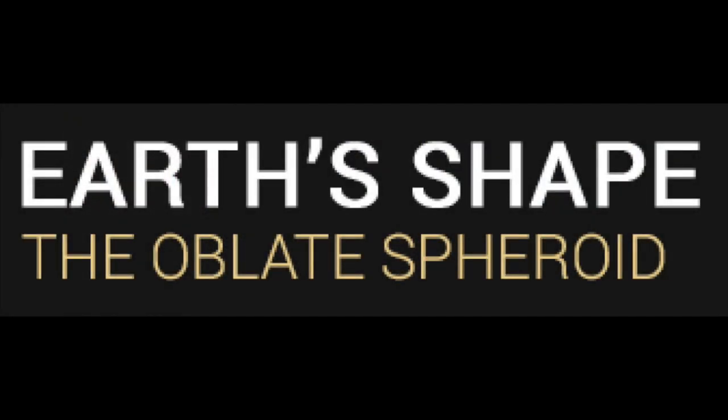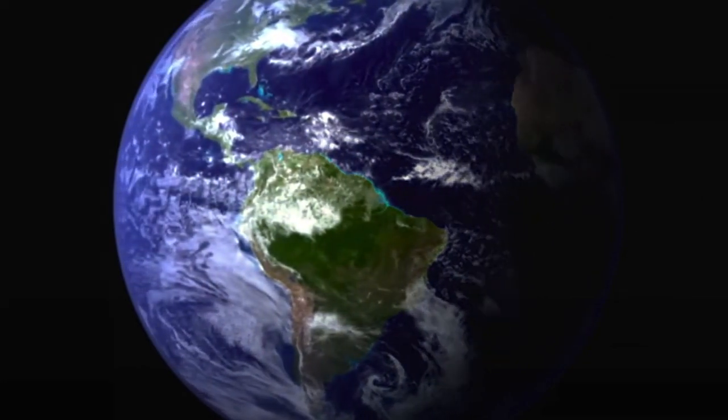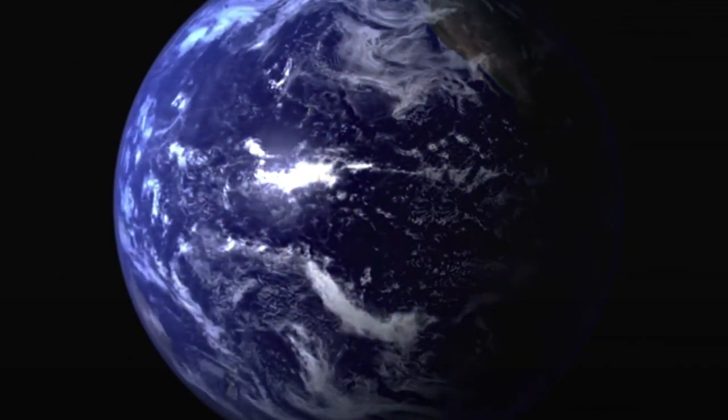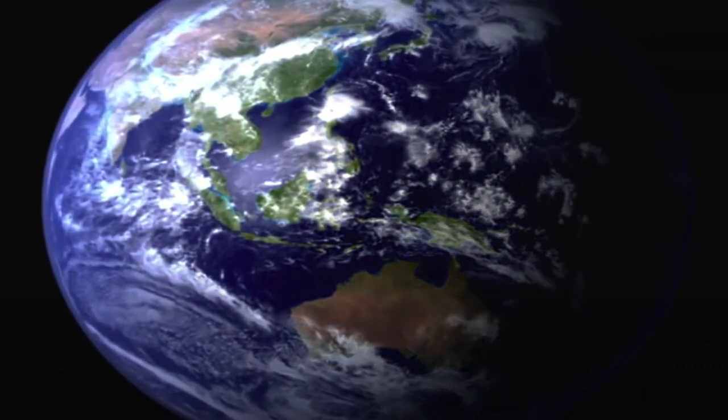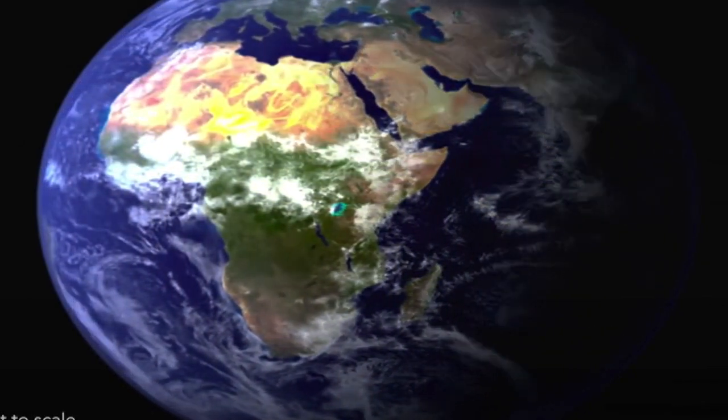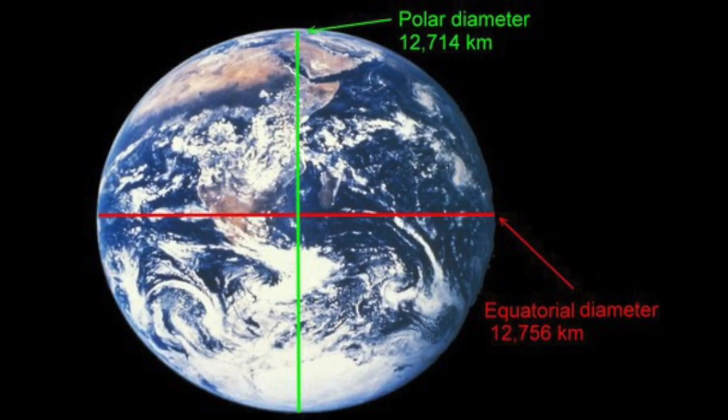The Earth's shape is an oblate spheroid. This means a sphere which is slightly squashed by 42 kilometers at the poles. From pole to pole, the polar diameter of the Earth is 12,714 kilometers, but the equatorial diameter is 12,756 kilometers.